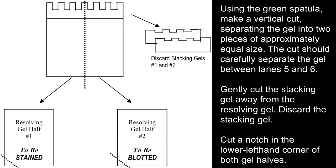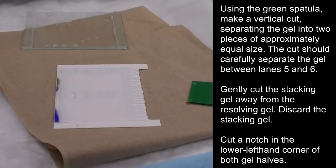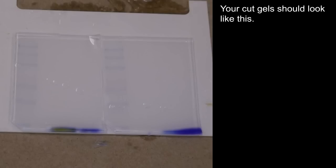Using the green spatula, make a vertical cut separating the gel into two pieces of approximately equal size. The cut should carefully separate the gel between lanes 5 and 6. Gently cut the stacking gel away from the resolving gel. Discard the stacking gel. Cut a notch in the lower left hand corner of both gel halves.